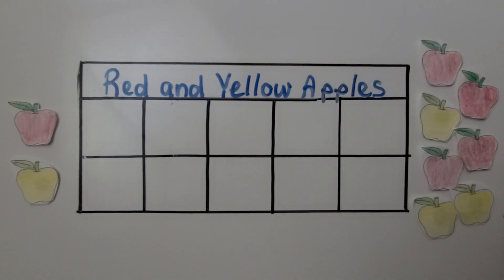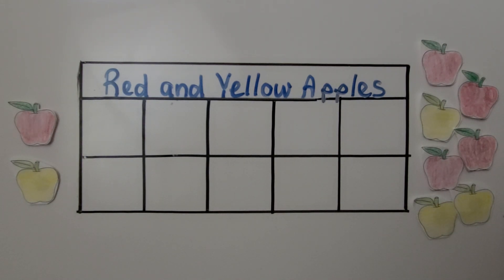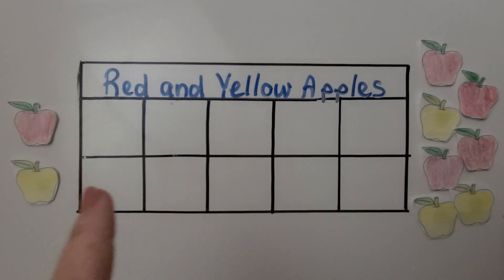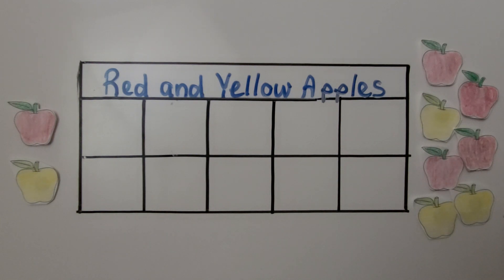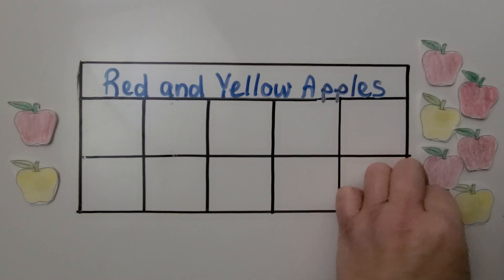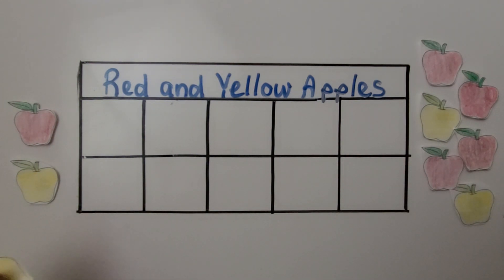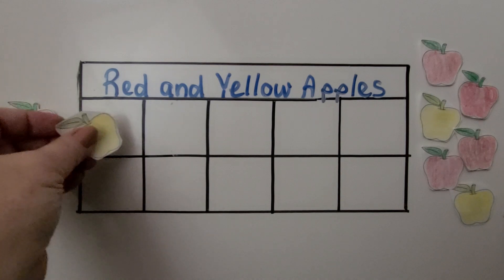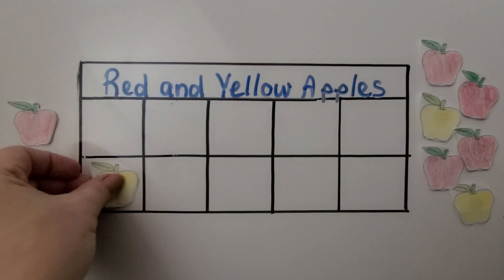We can sort these apples into the correct row and category. We put the red up here and the yellow down here. We put one apple in each box, starting on the left side. We got a yellow.